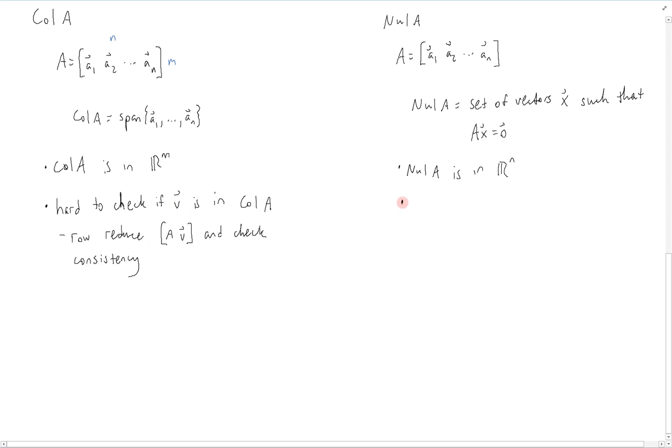For the null space, it's easy to check if a particular v is in the null space because all we have to check is whether the product A times v is equal to 0. So therefore, we just have to perform one multiplication, A times v, and check if that gives us the 0 vector. If it does, then v is in the null space. If not, then it's not.